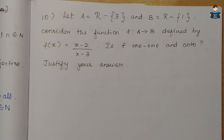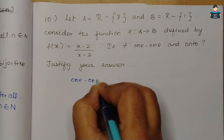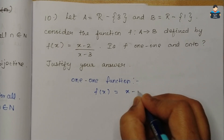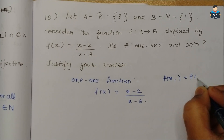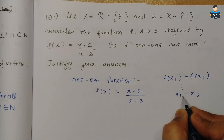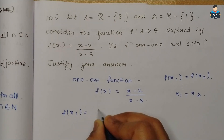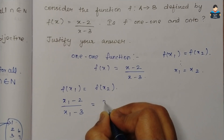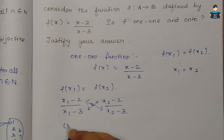First, let's check the one-to-one function. f(x) = (x-2)/(x-3). For one-to-one, assume f(x₁) = f(x₂), which should imply x₁ = x₂. So, f(x₁) = f(x₂) gives (x₁-2)/(x₁-3) = (x₂-2)/(x₂-3).